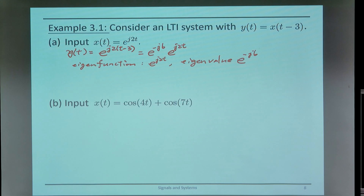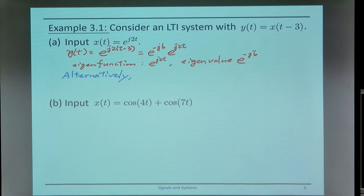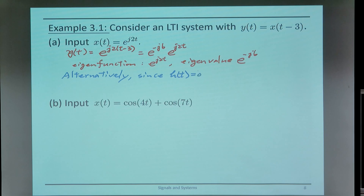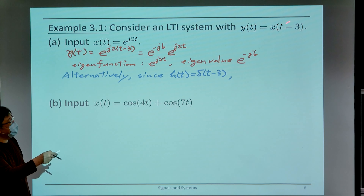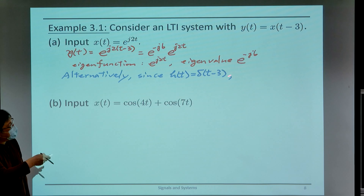Alternatively, we can derive the eigenvalue in a different way. We know that for this system, the impulse response is h(t) = δ(t-3). The impulse response is the system's response to an impulse at the input — so if you replace x with delta, you get the impulse response h(t).